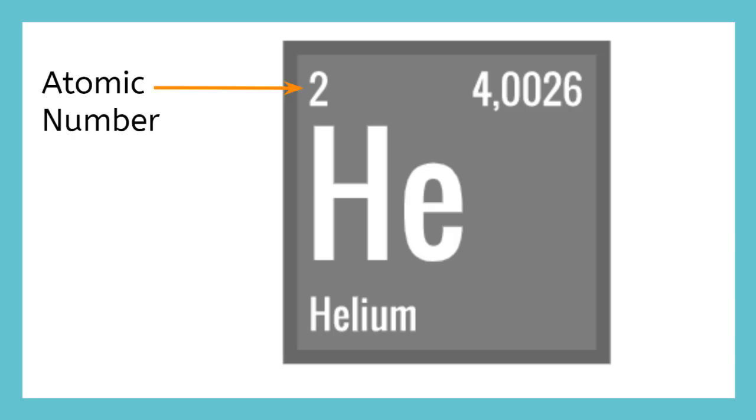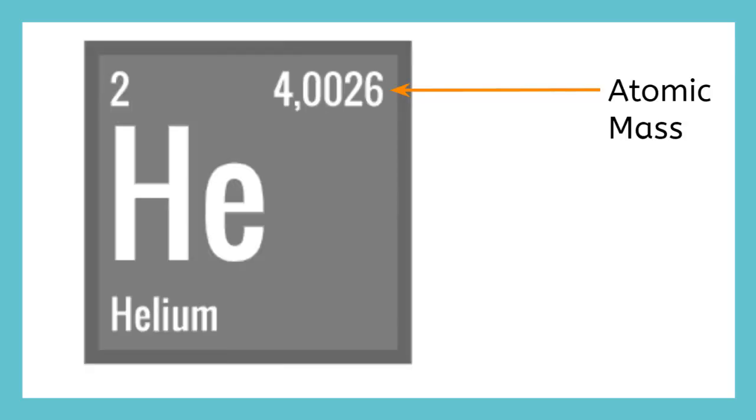Up in the left corner is the atomic number. It is called the atomic number because it represents how many protons are in the element's atom. How many protons does helium have? Two. And up here in the right corner, we have the atomic mass. The atomic mass is an average mass for each atom in any form that it takes.